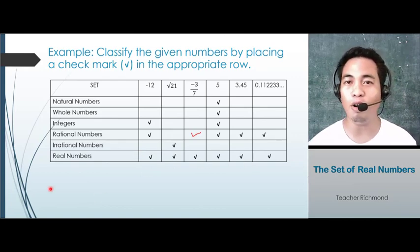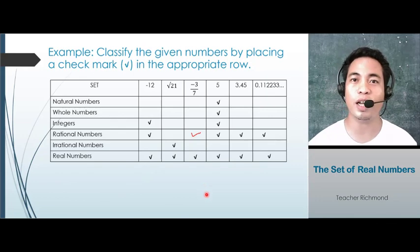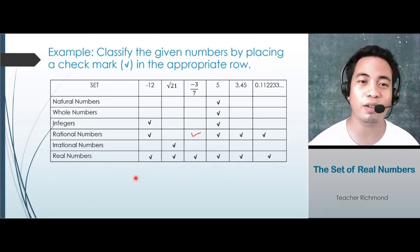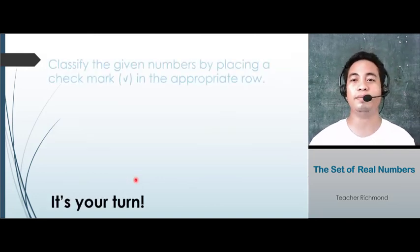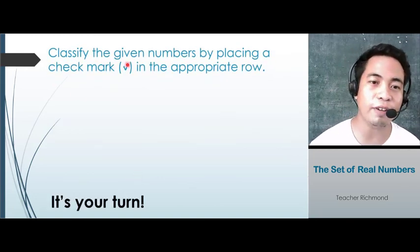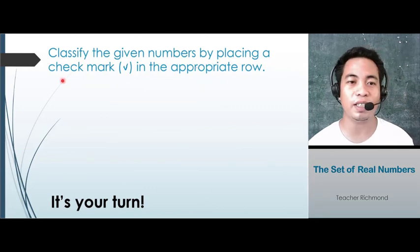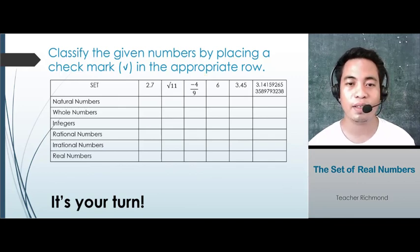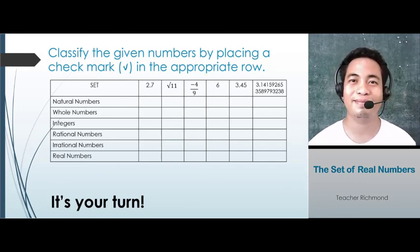And lastly, real numbers — all of them are real numbers, since all the numbers that you can plot on the number line system are all real numbers. Now it's your turn: classify the given numbers by placing a check mark in the appropriate row. We'll see you next time. Bye-bye.